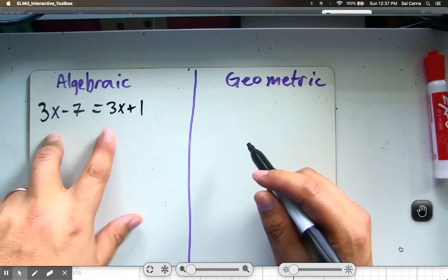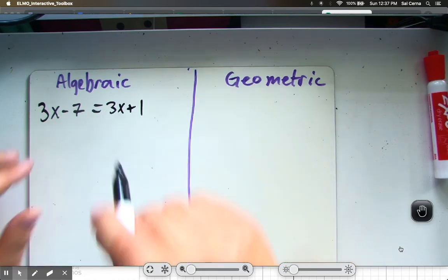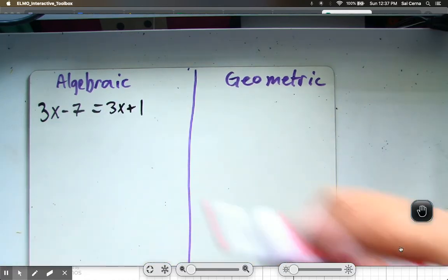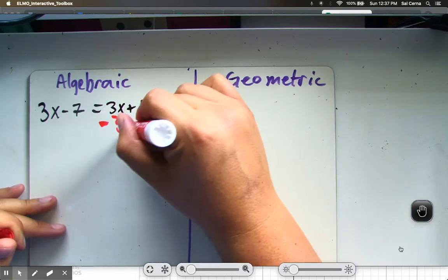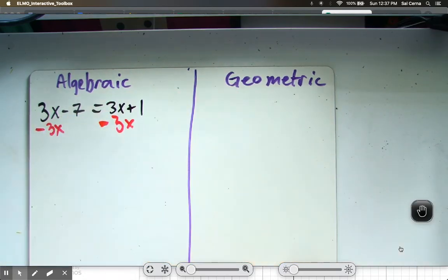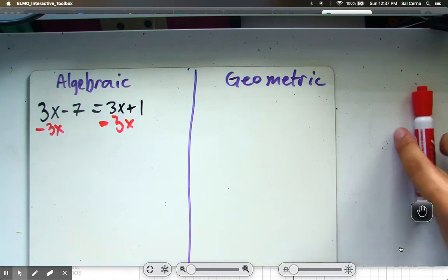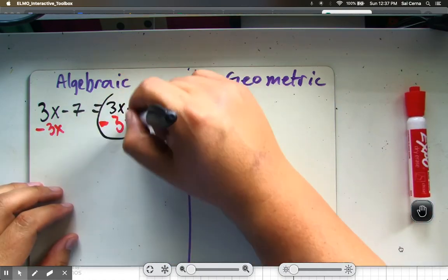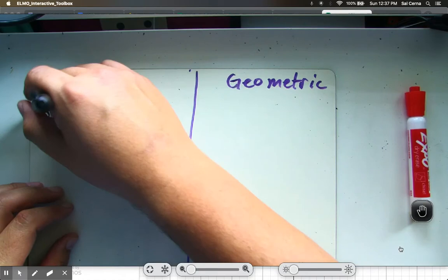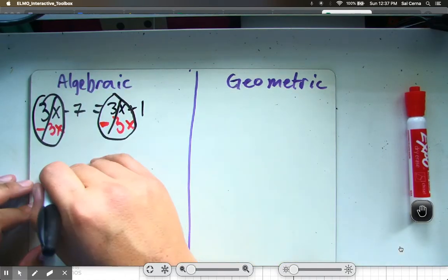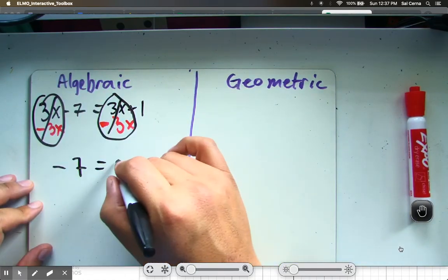If I subtract 3x from both sides, I'm going to remove the same amount. What happens when I do that? I end up with a zero pair. Entonces, mi resultado es negativo 7 es igual a uno positivo.